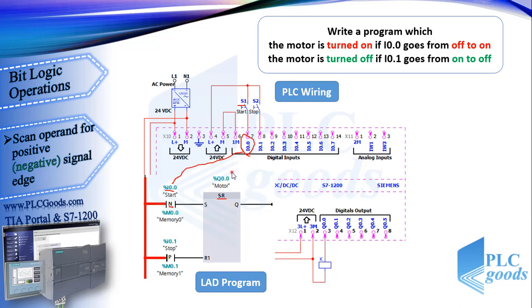When this pushbutton is in its normal condition, I 0.0 is 0. If I press it, I 0.0 will change from 0 to 1. Then if I release the start pushbutton, I 0.0 state changes from 1 to 0. Now the used instruction generates a pulse for just one program cycle, and this pulse makes the SR flip-flop turn on its output.